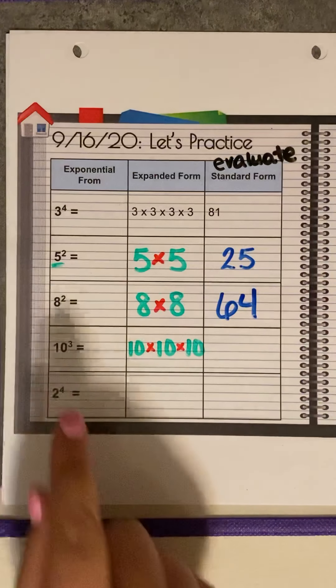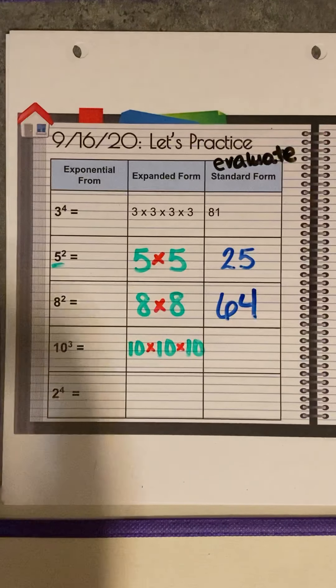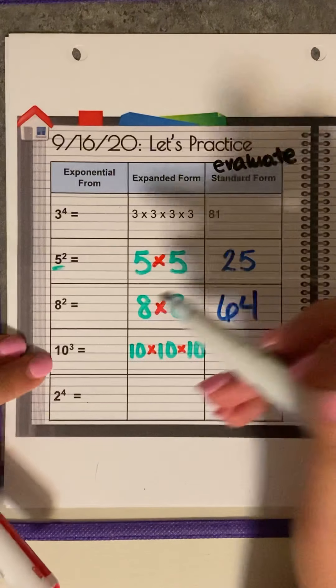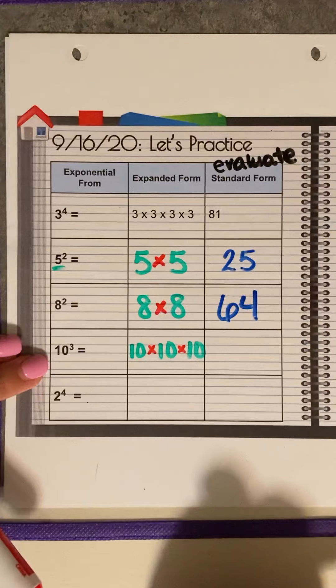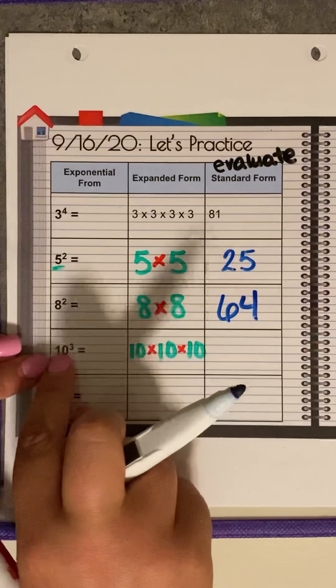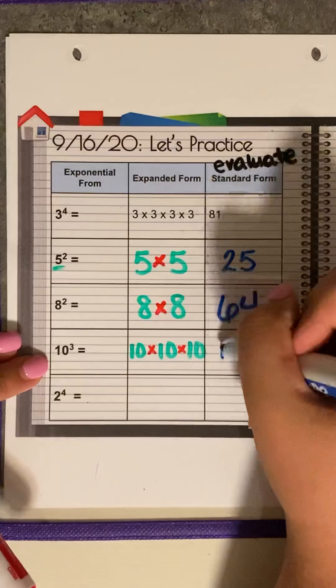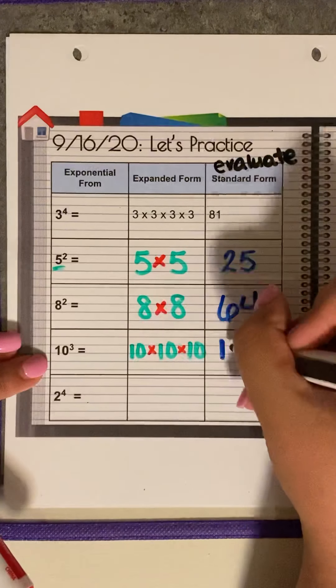Or if you see a ten, and this only works for tens, if you want to do it this way. If you see a ten with an exponent to the third power, that means you're going to have a one, the first one. And that exponent is going to tell you how many zeros. So one with three zeros.